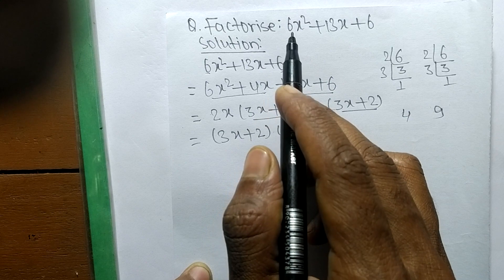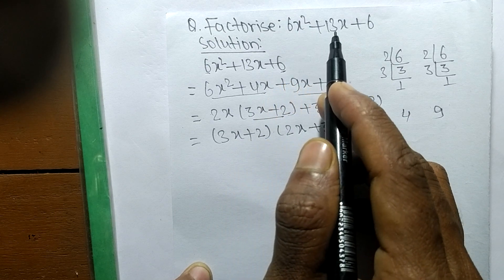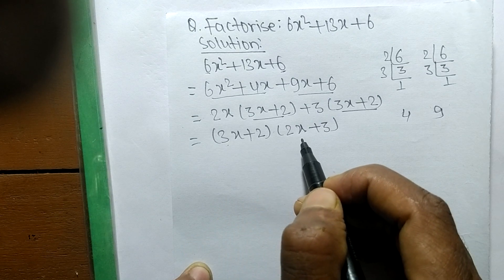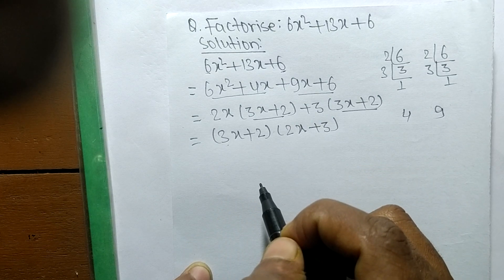So the factors of 6x² + 13x + 6 is (3x + 2) and (2x + 3).